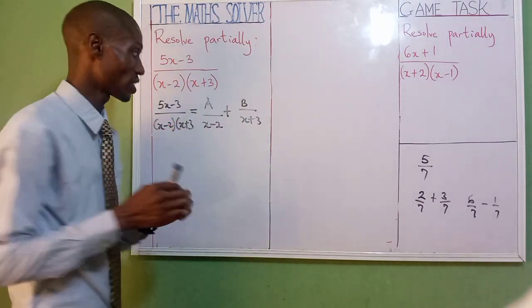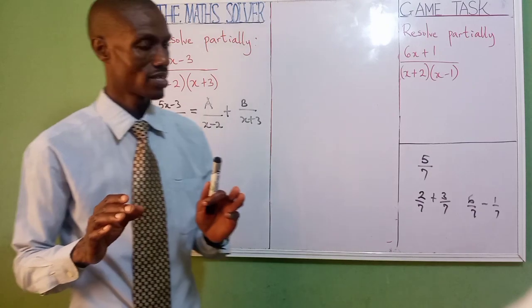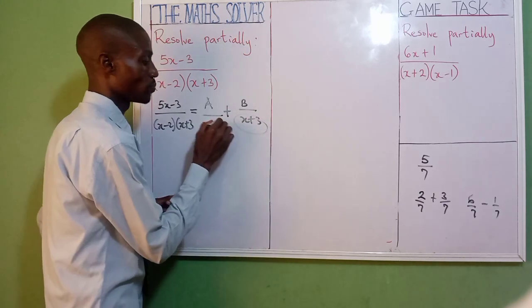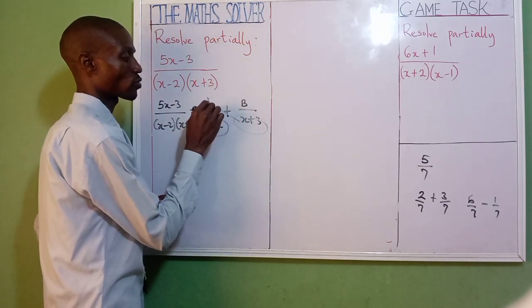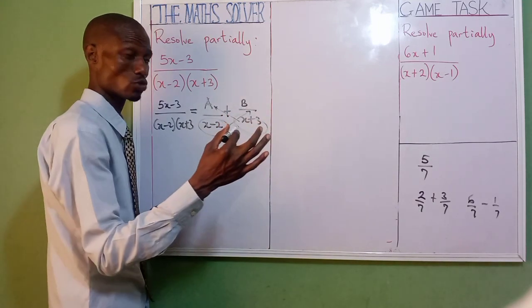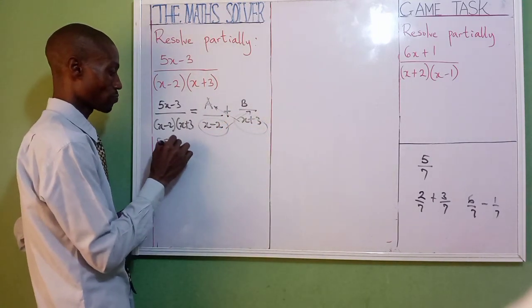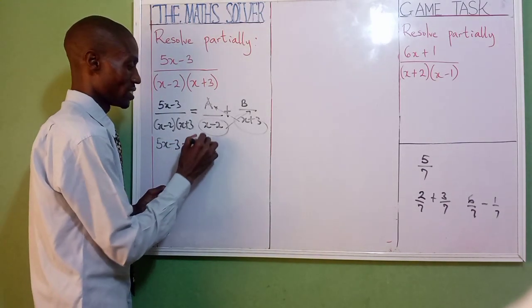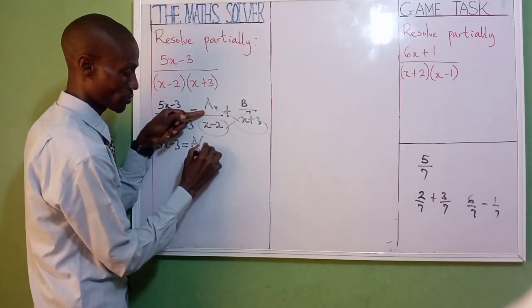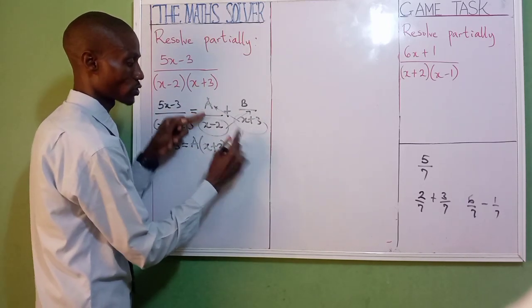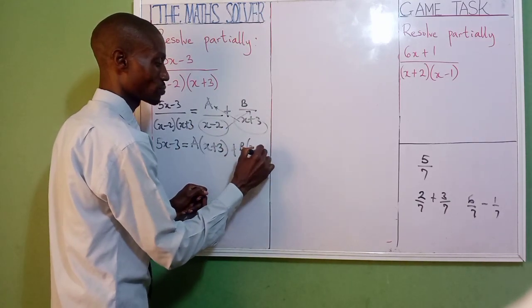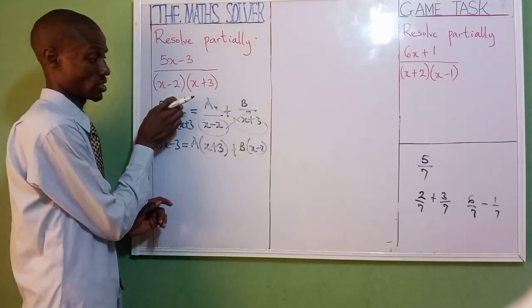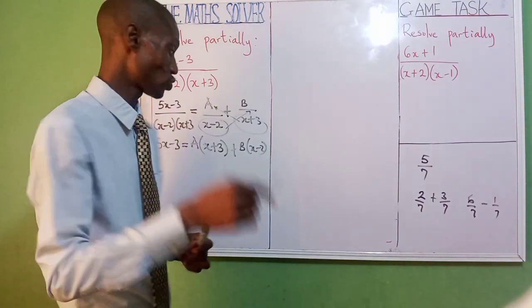Don't forget to say elimination method. Now by the time you are solving something like this, it's like cross-multiplying — just write 5x minus 3, as if you are cross-multiplying: A into bracket x plus 3, plus B into bracket x minus 2. Just do it straight away. It's as simple as that — just bring this one here, bring this one here, and equate it to this. Now we are talking of elimination method. This is where we are now going to use the elimination method.